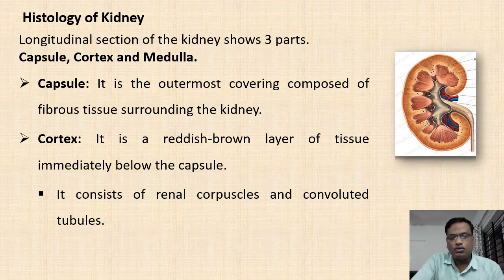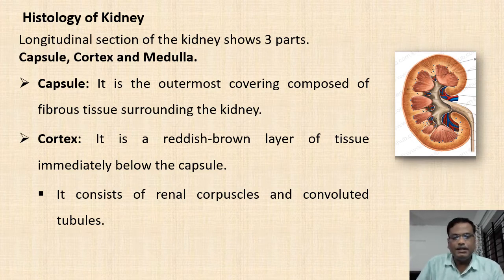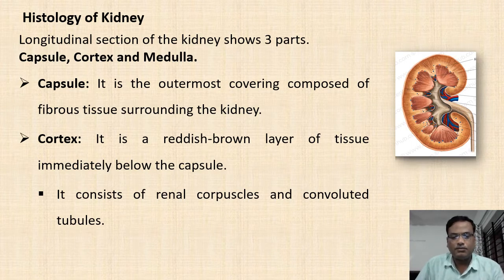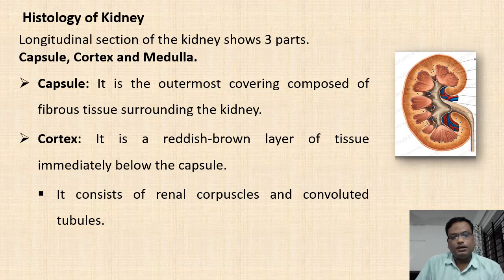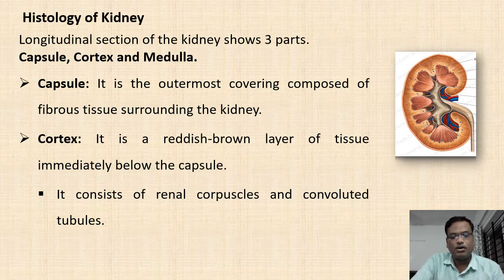The capsule is the outermost covering and it is made up of fibrous tissue surrounding the kidney. Like almost all other organs, the kidney is also covered by a fibrous capsule, which is mainly protective in function. The functional part of the kidney is made up of cortex and medulla, whereas the capsule is the protective part.